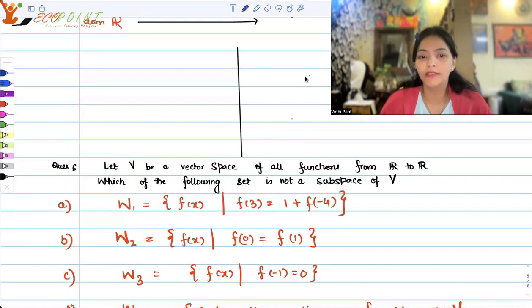Let V be a vector space of all functions from R to R. Which of the following set is not a subspace of V?